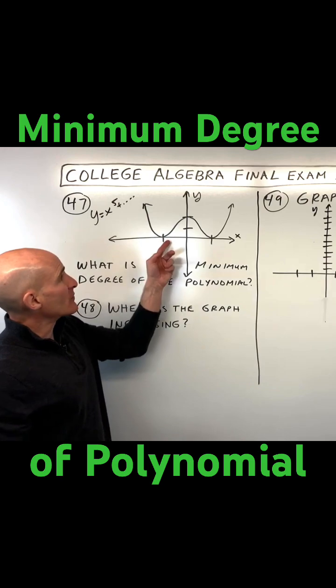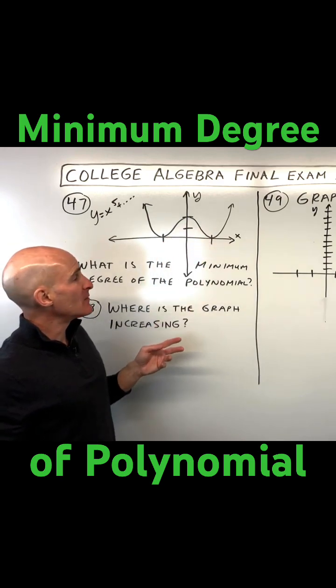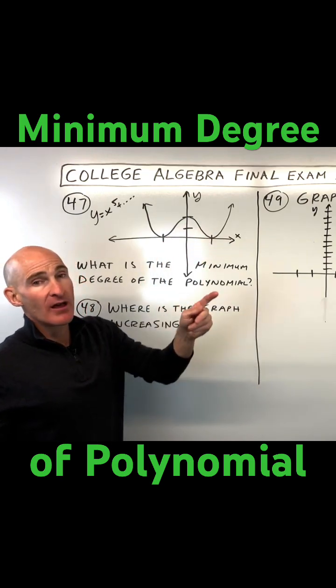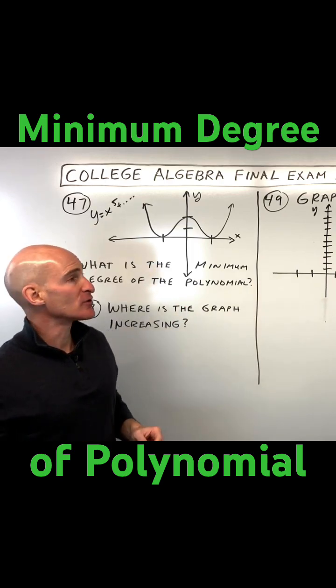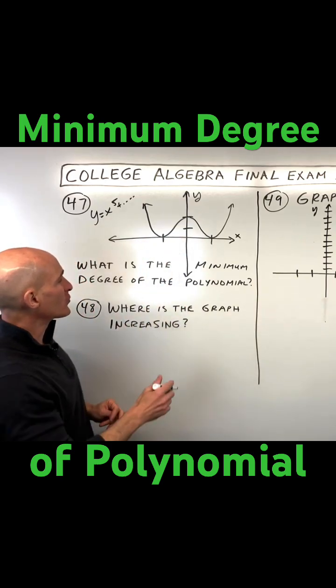If we're working backwards here, if you can see there's three bends, then the minimum degree of this polynomial would be n plus one. So it would be three plus one is four. A fourth degree would be the minimum.